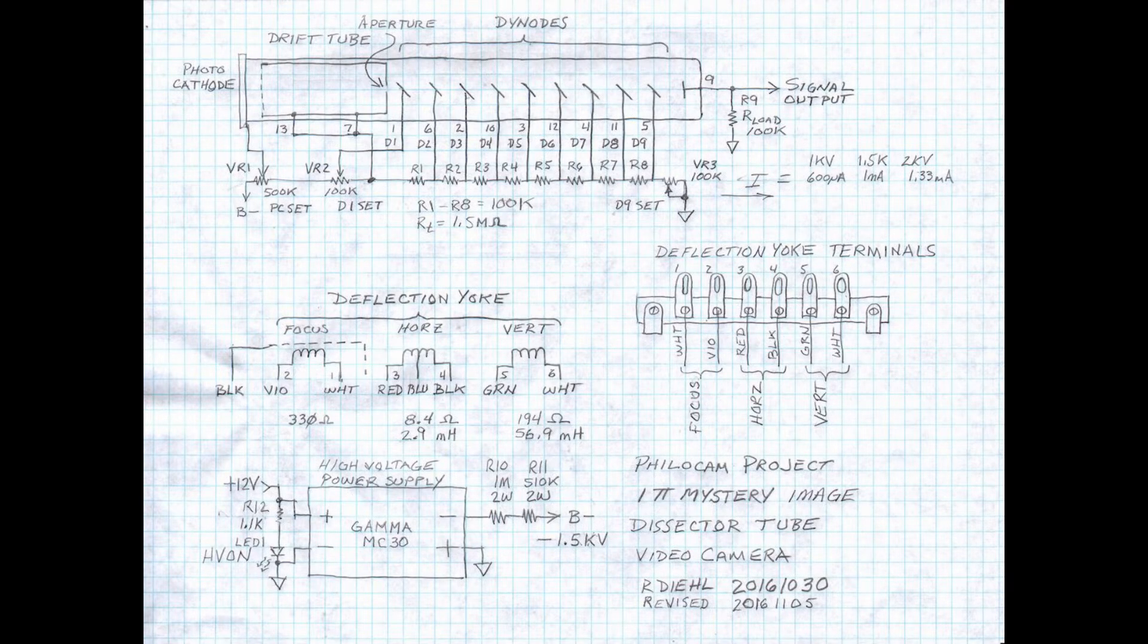The photocathode in my camera can be varied between minus 1500 and minus 1000 volts. Two more pots are connected to the first dynode and the last dynode respectively. Each dynode is progressively more positive by approximately 100 volts than the previous one. The output signal is developed across the 100k load resistor at ground potential, or zero volts. This makes connecting this high voltage vacuum tube to the low voltage input of the video amplifier easy.